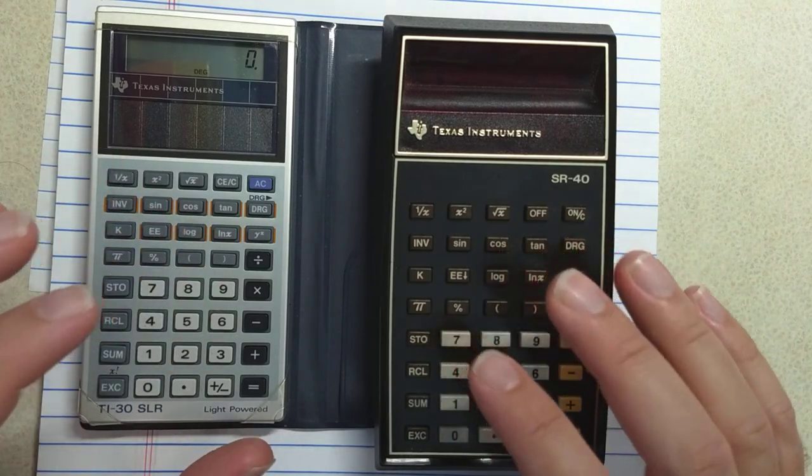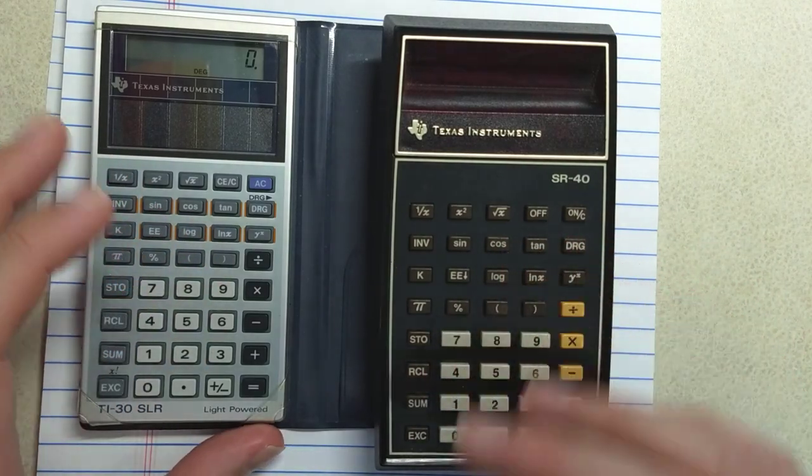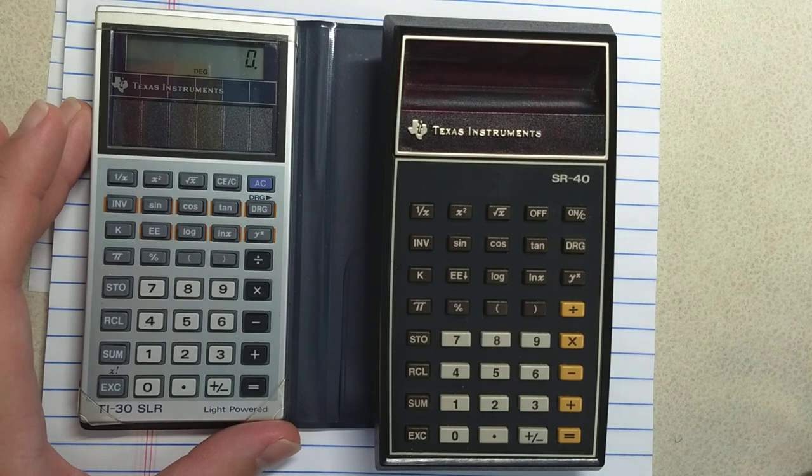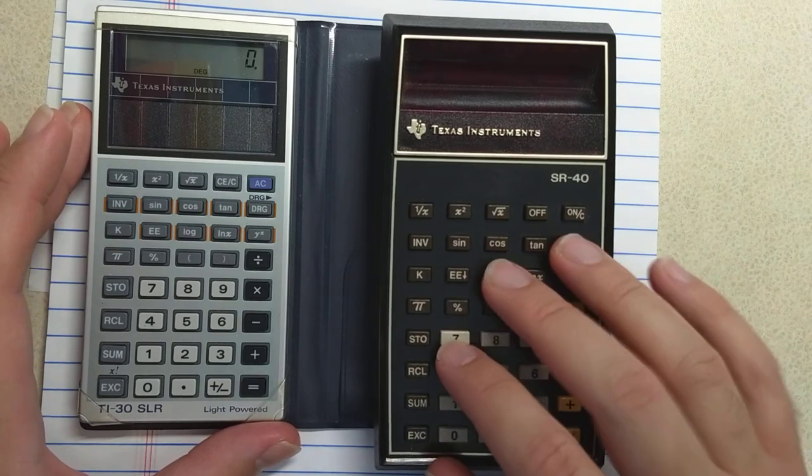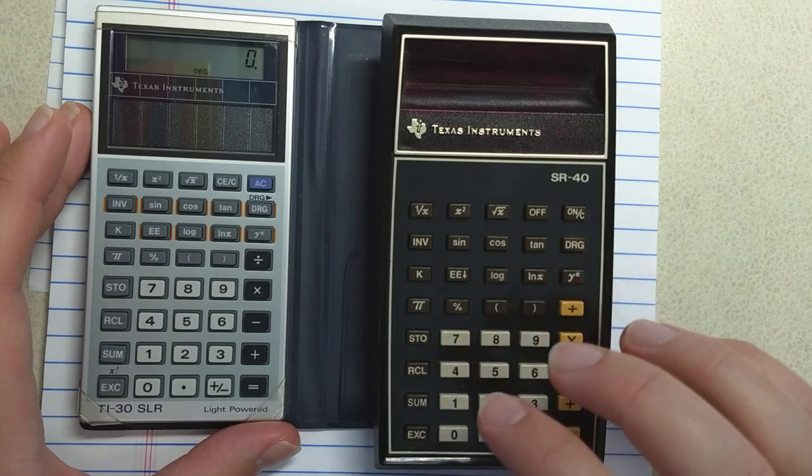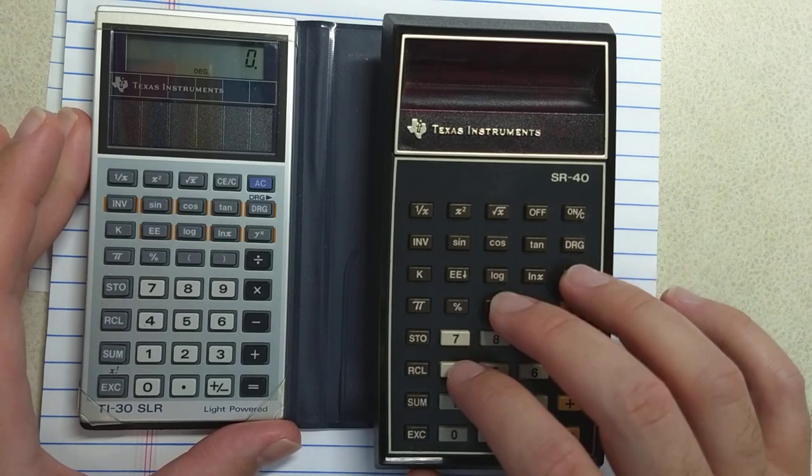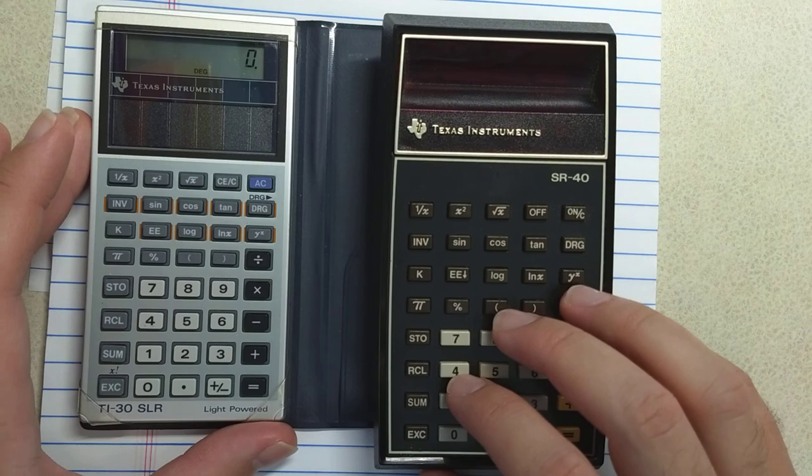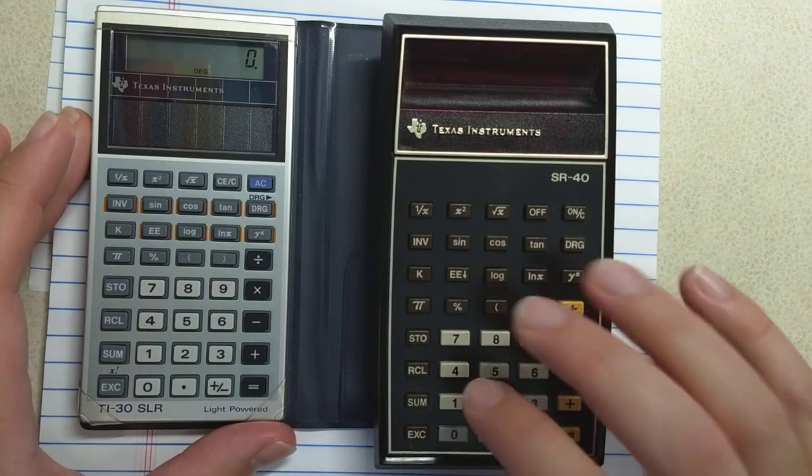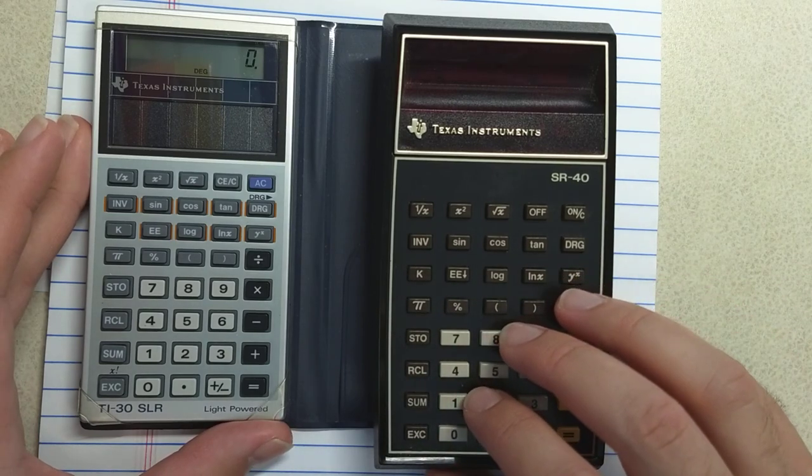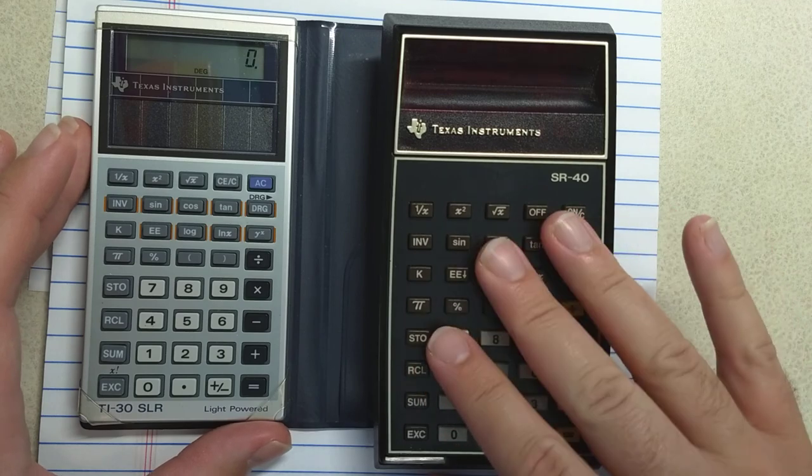Okay, and it's also lacking programming features. So the HP, I think, 55 and 65 and some TI calculators already out at this time have programmability. So you can type a program into them. You can run the program. So you can kind of extend what your calculator can do. Those are missing on the TI-30.